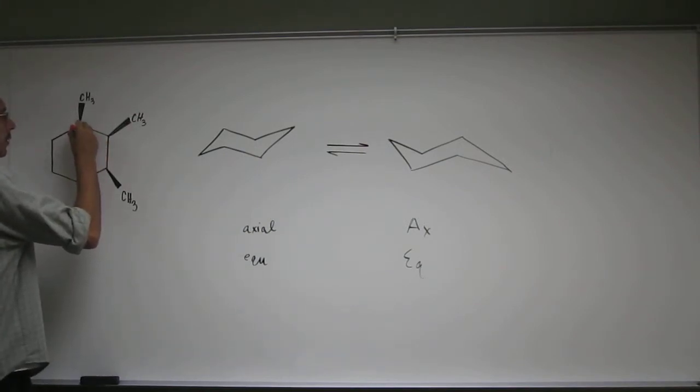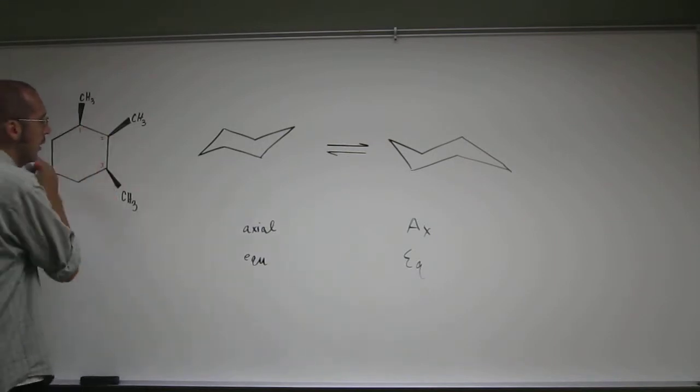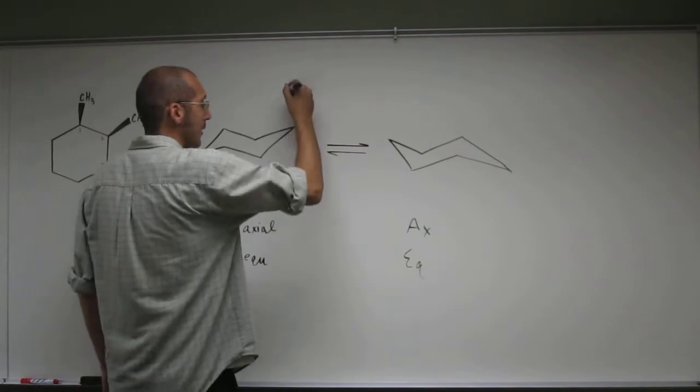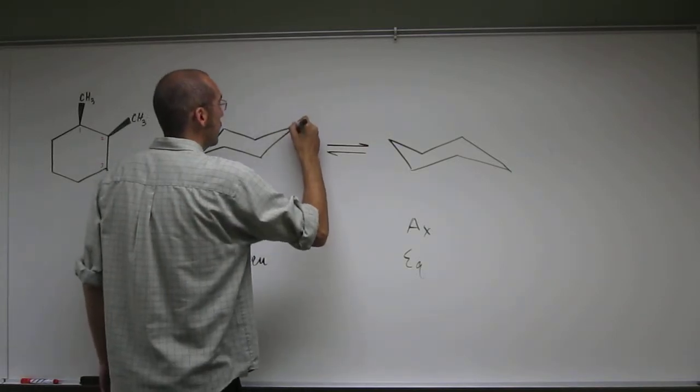So, label your carbons 1, 2, 3, and you can start that labeling wherever. I like to start with 1 at the top, that's just my personal preference. And up, I'll just put as axial on this one.